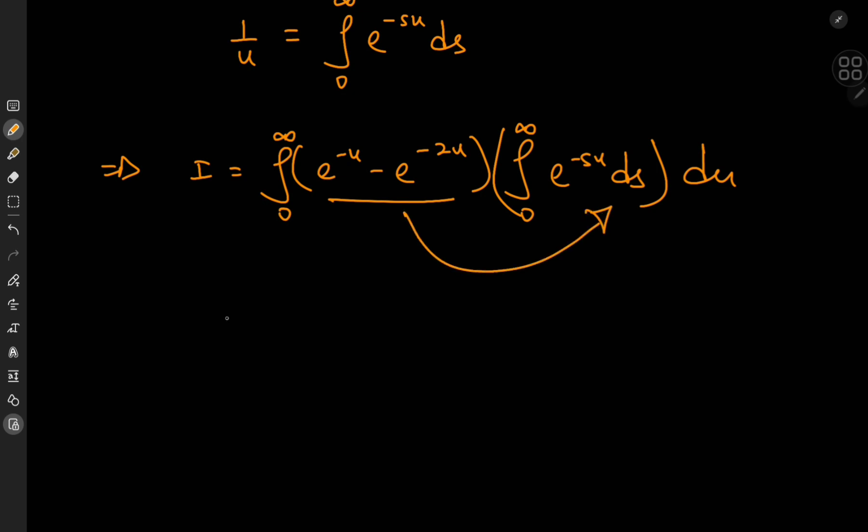And because these functions out here are independent of the s variable, we can take them inside the integration operator with respect to s, and write this now as the double integral from 0 to infinity of e to the negative u minus e to the negative 2 times u, e to the negative su integration with respect to s first, and then with respect to u.